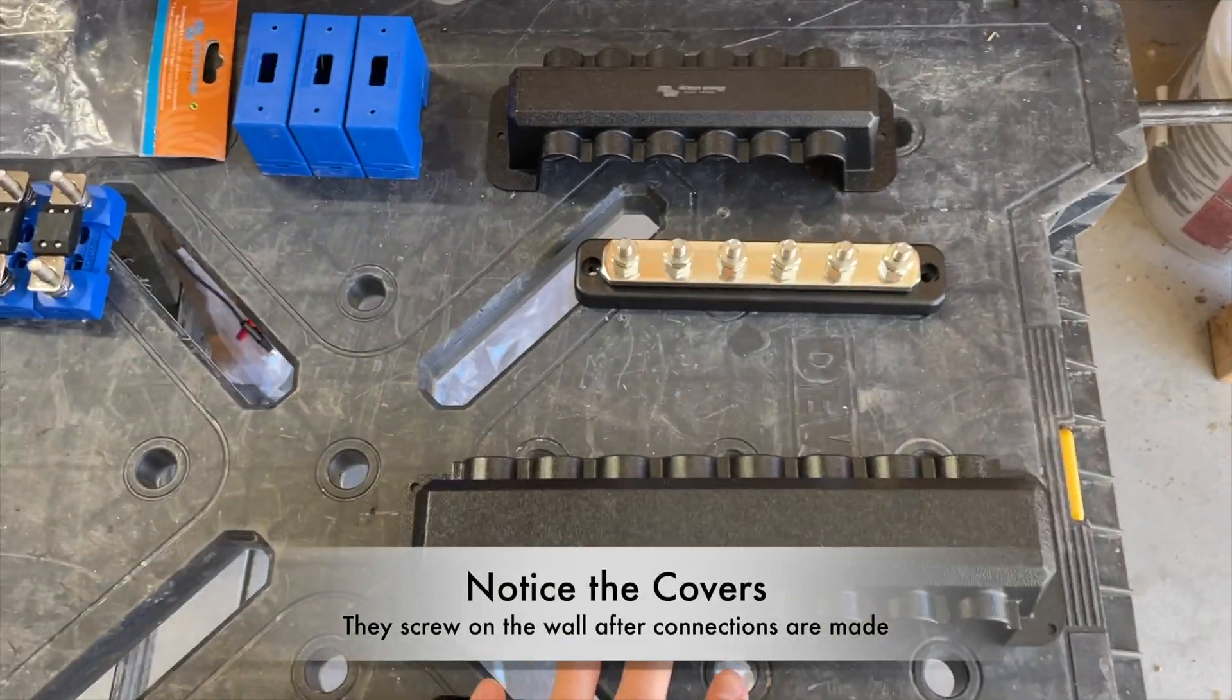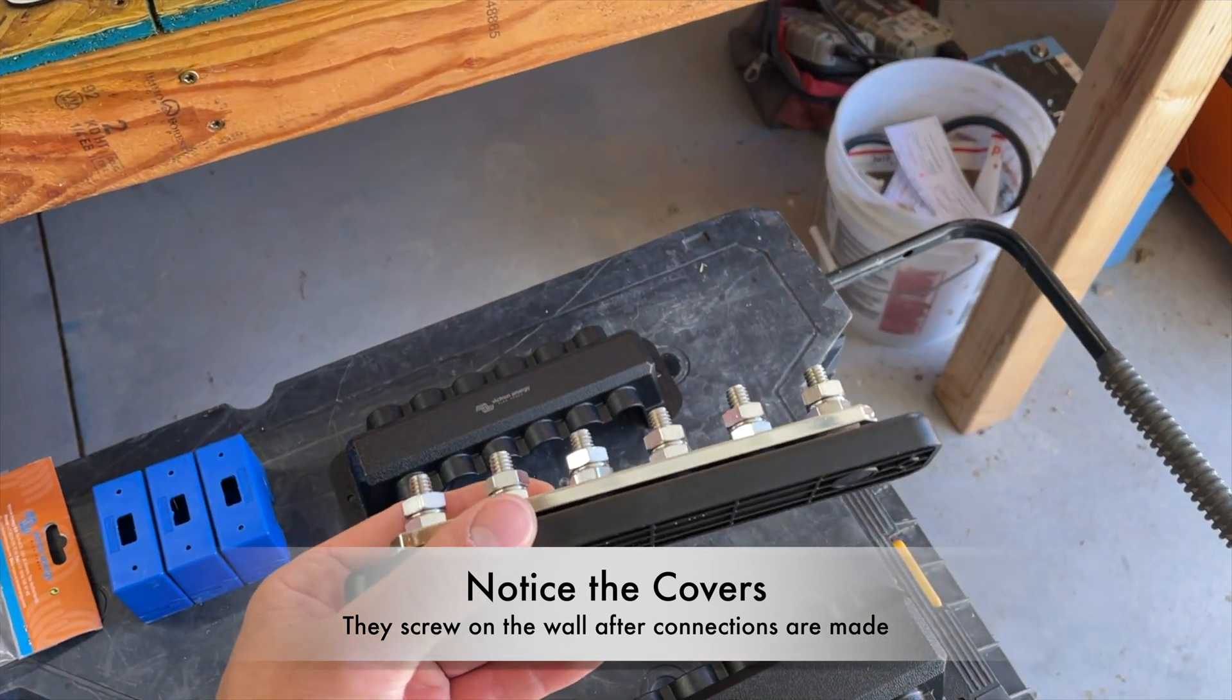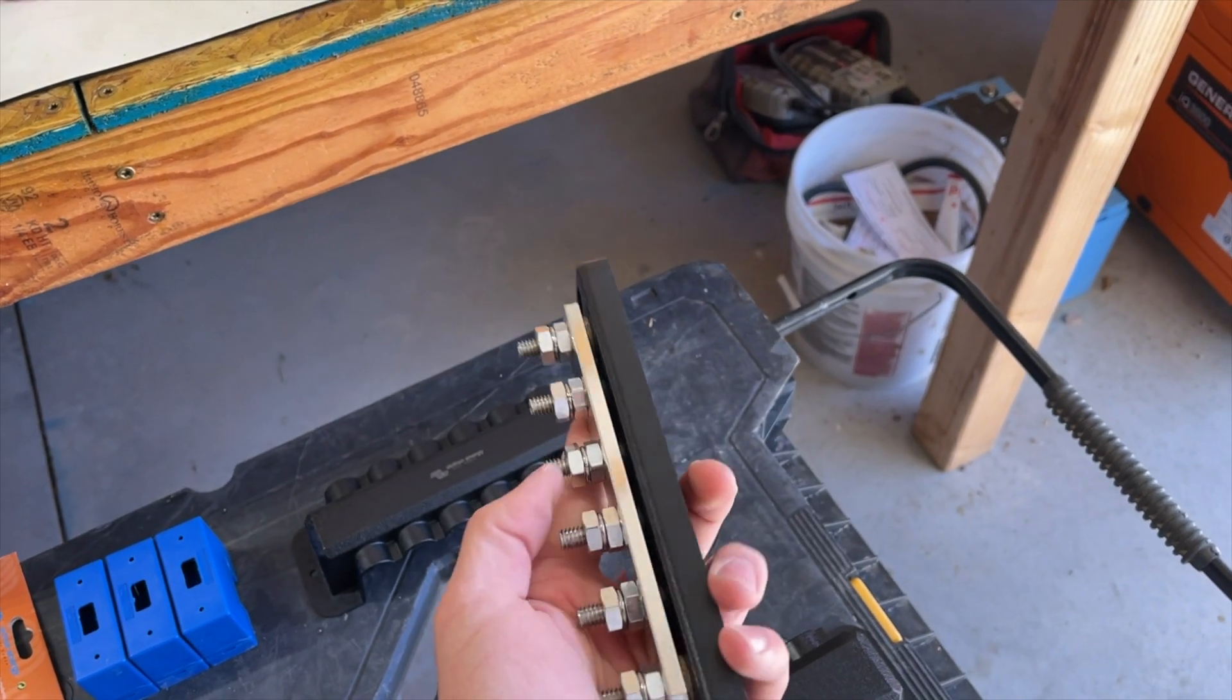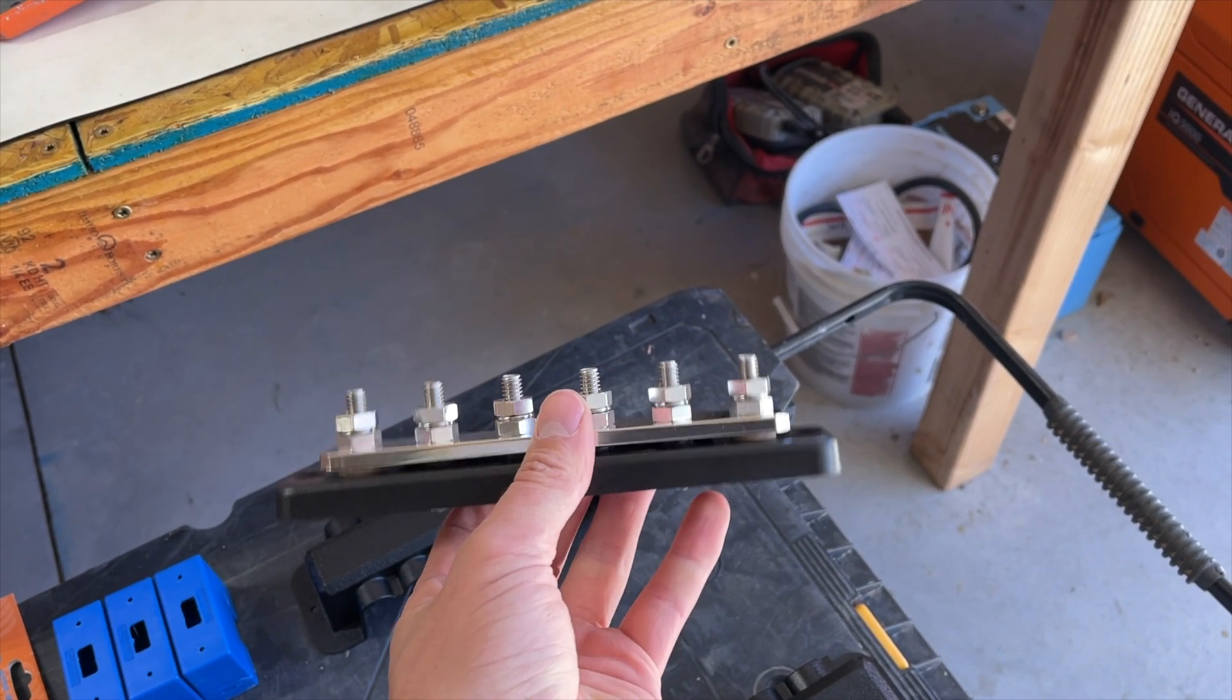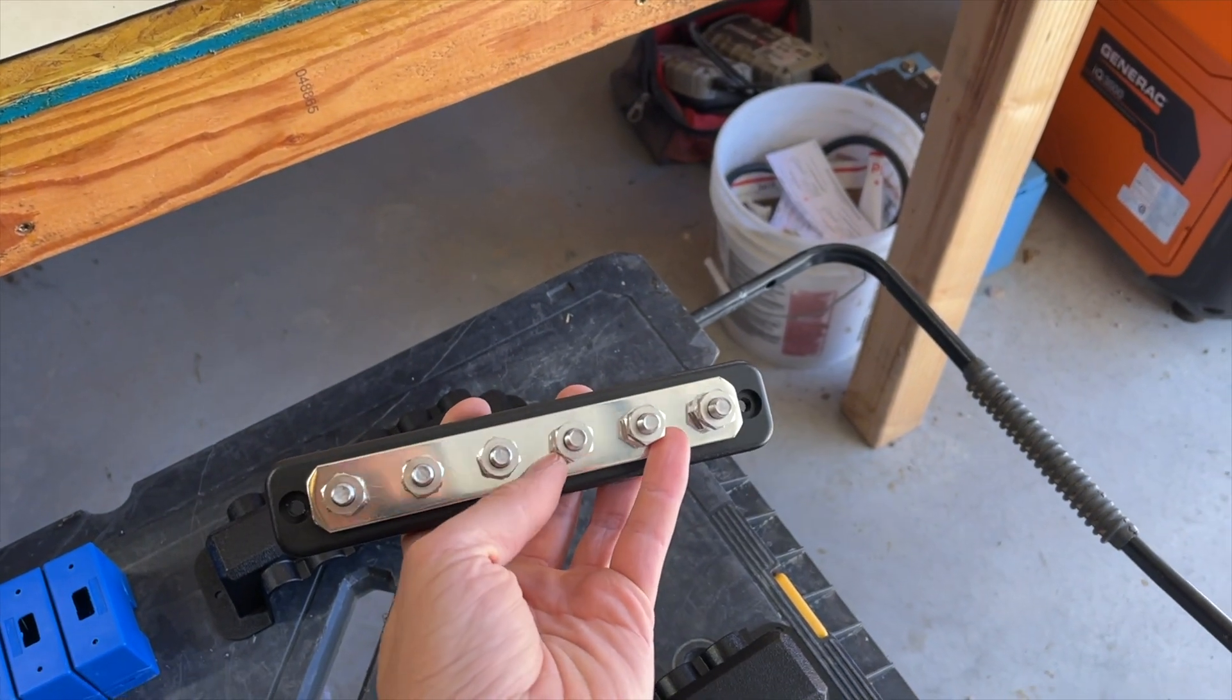And then we've got these bus bars. This one here is a 250 amp bus bar. This is available in several types. This one here is the six pole. The four pole is very similar. And then there's other types that have fewer poles like this, but then they've got terminal screws.